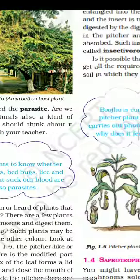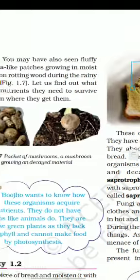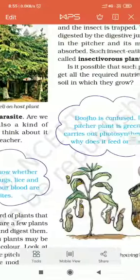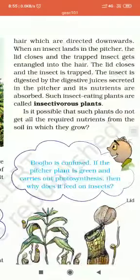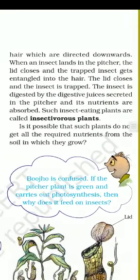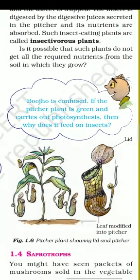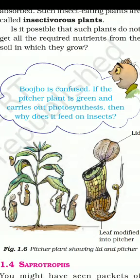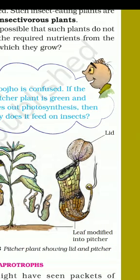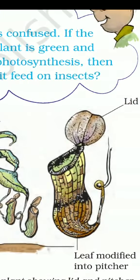Another mode of heterotrophic nutrition is the insectivorous plant. There are some plants which are insect-eating plants. One example is the Pitcher plant — 'Pitcher' means Ghada. The mouth of the pitcher contains a lid. An insect comes to the pitcher and gets trapped inside it.